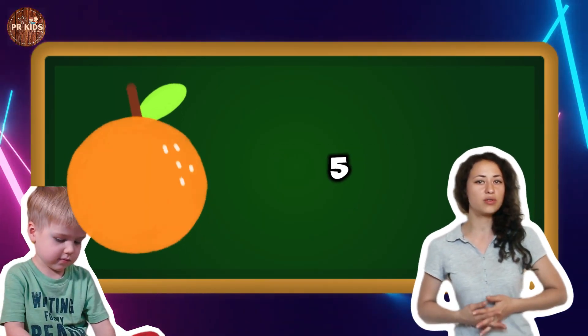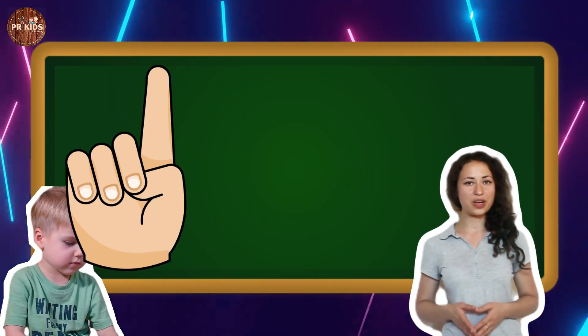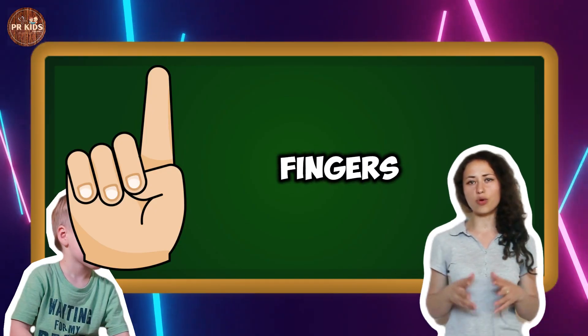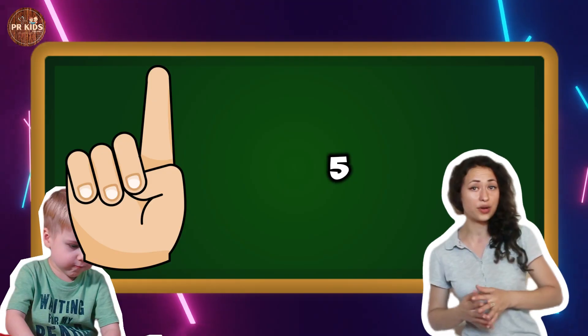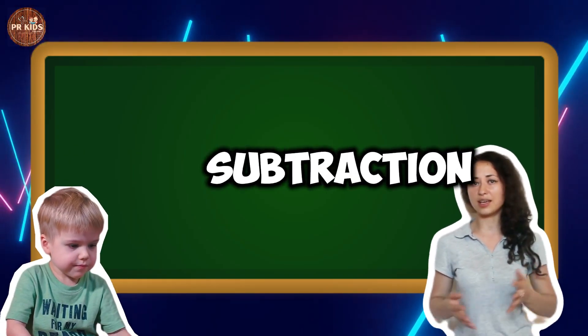Five oranges. One finger plus two fingers makes three fingers. Two plus three makes five. Now let's learn subtraction.